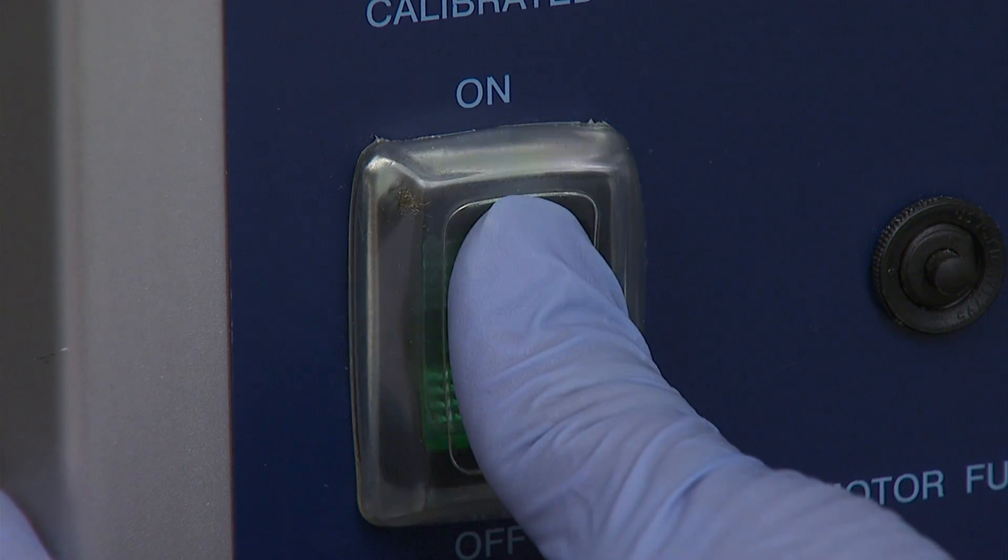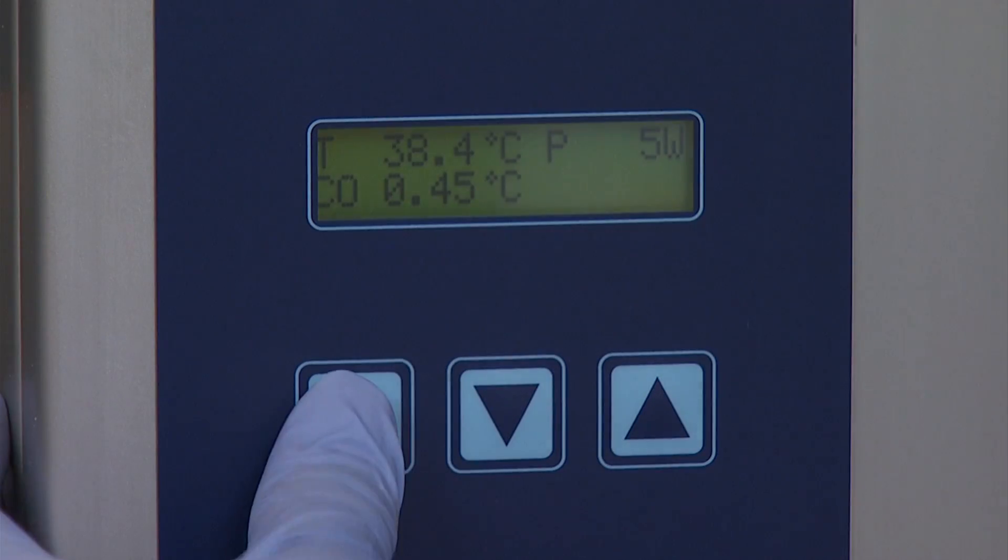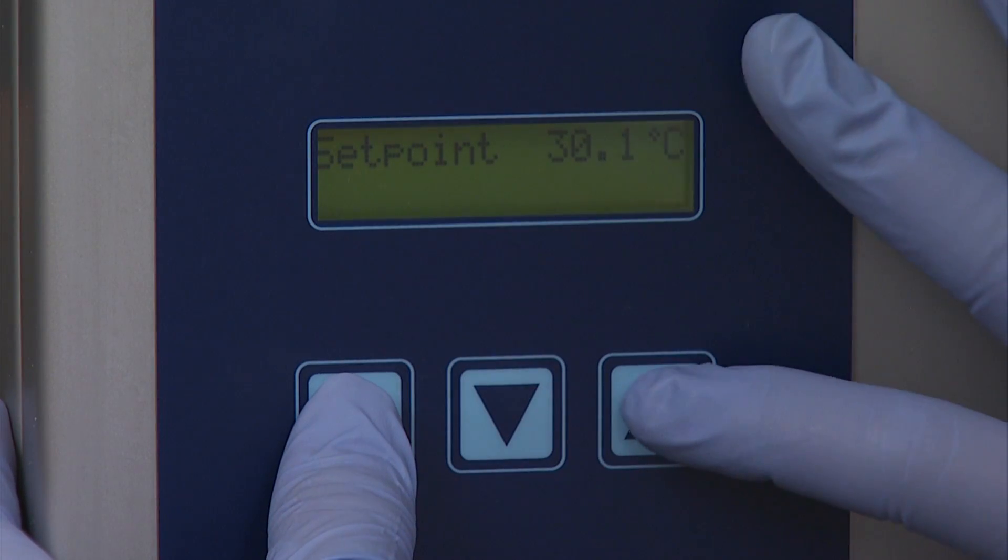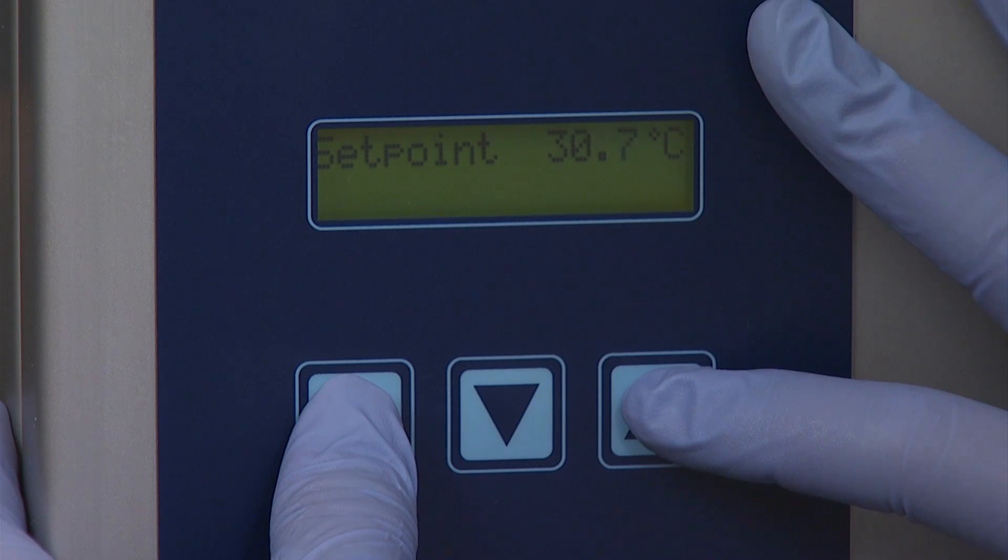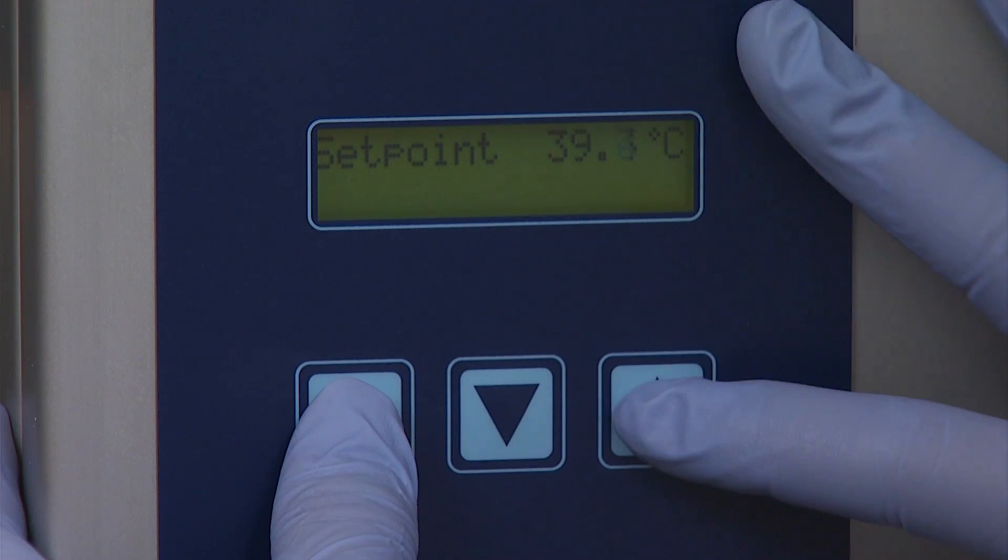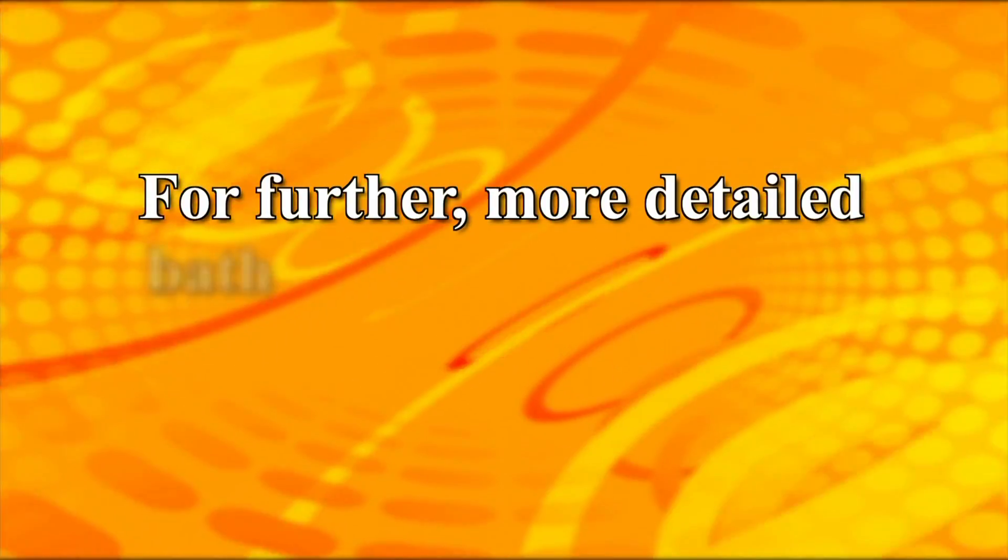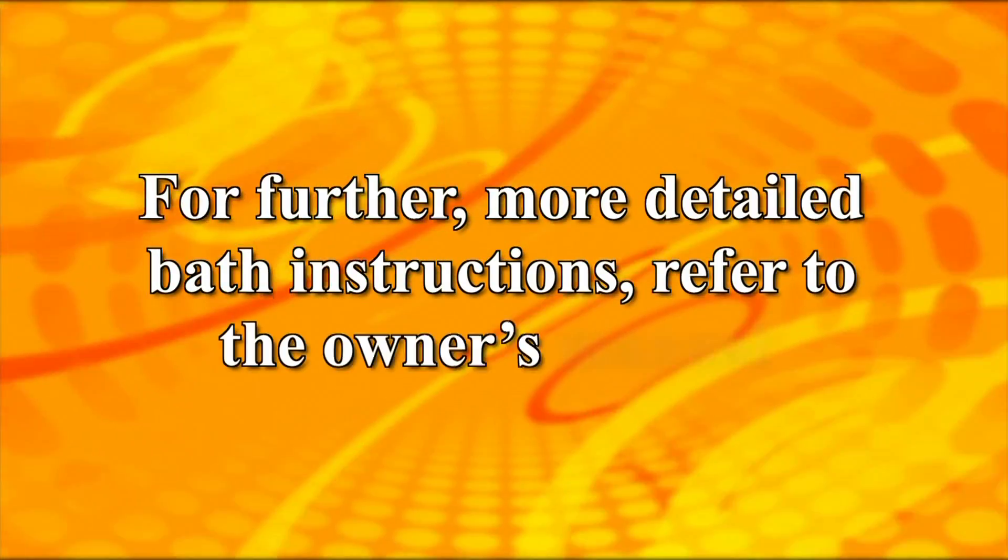Turn on the power to the viscometer bath and adjust the temperature to 40 degrees Celsius and ensure that temperature remains stable. The temperature set point can be adjusted by pressing the mode button until the set point option appears, then using the arrows to raise or lower the temperature set point. For further, more detailed bath instructions, refer to the owner's manual. Allow the bath approximately 30 minutes to come to temperature and stabilize.